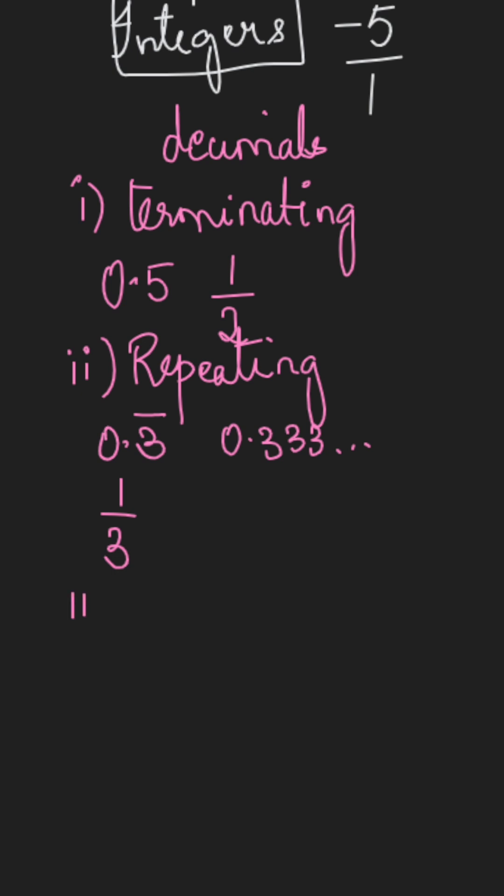Let us come to the third type of decimal. That is, non-terminating and non-repeating. These are the decimals which do not terminate and the digits also do not repeat.